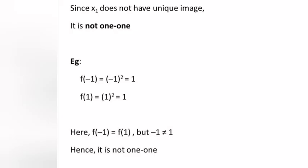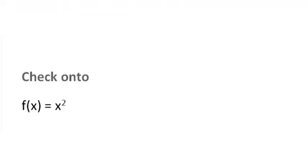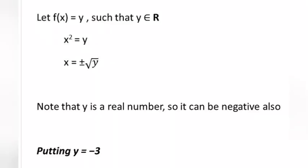Since x1 does not have a unique image, it is not one-one. For example, f(−1) = (−1)² = 1 and f(1) = 1² = 1. Here f(−1) = f(1) but −1 ≠ 1, hence it is not one-one. Now checking onto: let f(x) = x² = y where y belongs to R.